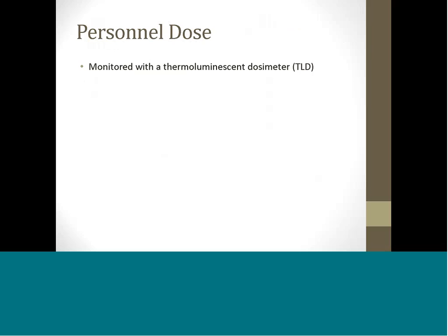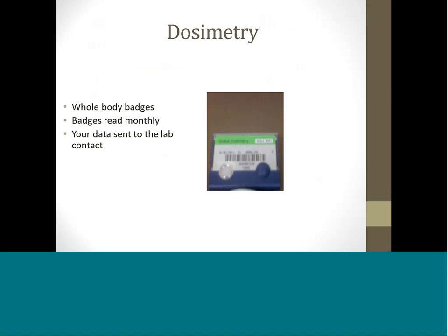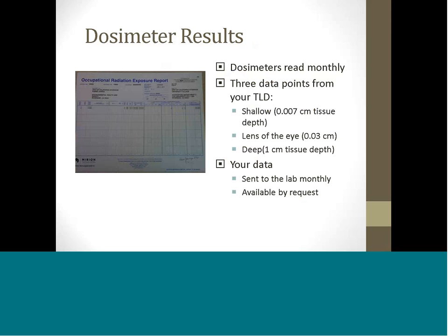People exposed to radiation on the job must be monitored for such exposure. Typically, the thermoluminescent dosimeter is used to determine the dose received. Whole body badges are worn by all users of non-shielded X-ray diffraction units and medical and dental X-ray machines. Badges are exchanged monthly. A report is sent to the lab contact and a copy is kept at the radiation safety office. Your dose history report contains three dose readings from your thermoluminescent dosimeter: the shallow dose equivalent, the deep dose equivalent, and the lens dose equivalent.